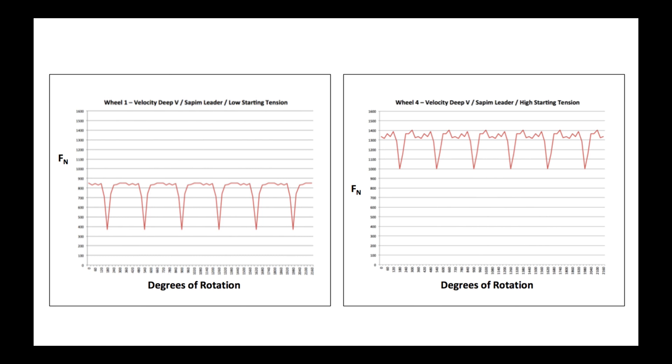On the left is wheel one, which was the Velocity Leader straight gauge spokes at low starting tension, whereas the one on the right is the same wheel except with high starting tension.